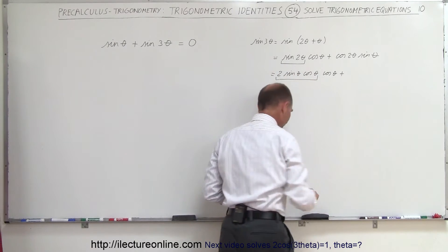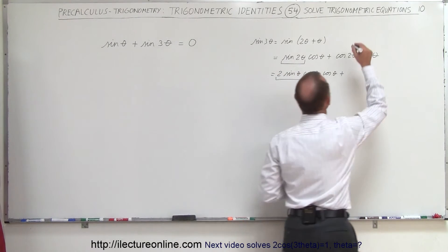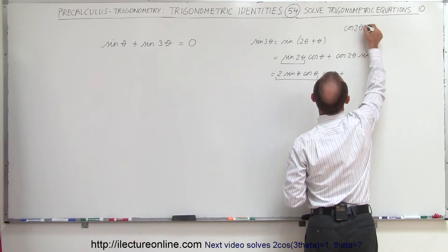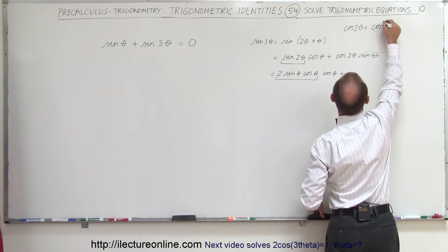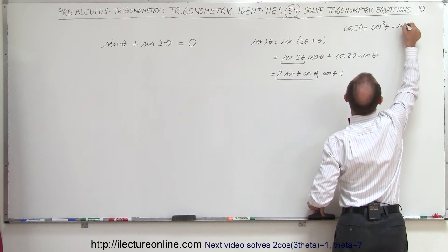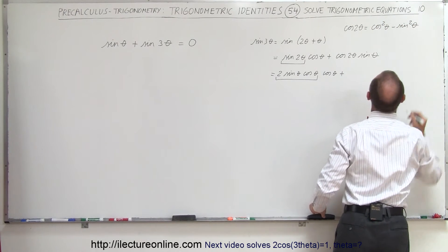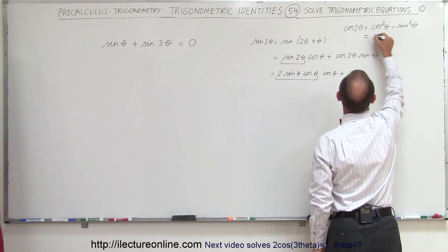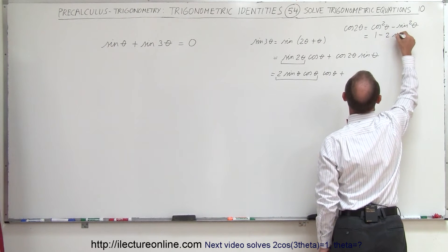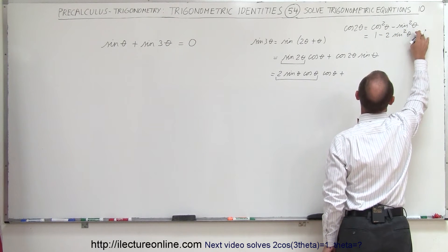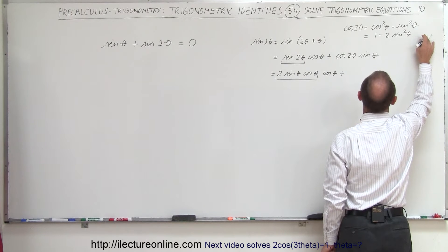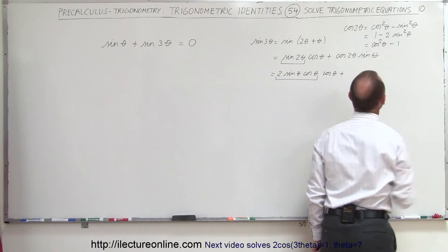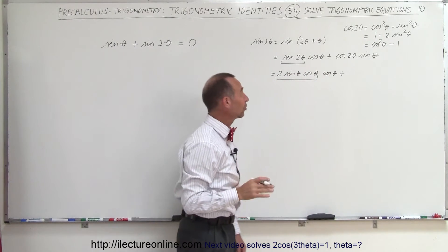What is the cosine of 2 theta equal to? There are different possibilities. We can write it as cosine squared theta minus sine squared theta. The cosine squared theta can be written as 1 minus sine squared theta, giving 1 minus 2 sine squared theta. Or sine squared theta can be written as 1 minus cosine squared theta, giving 2 cosine squared theta minus 1. So there are three different ways to write cosine of 2 theta.